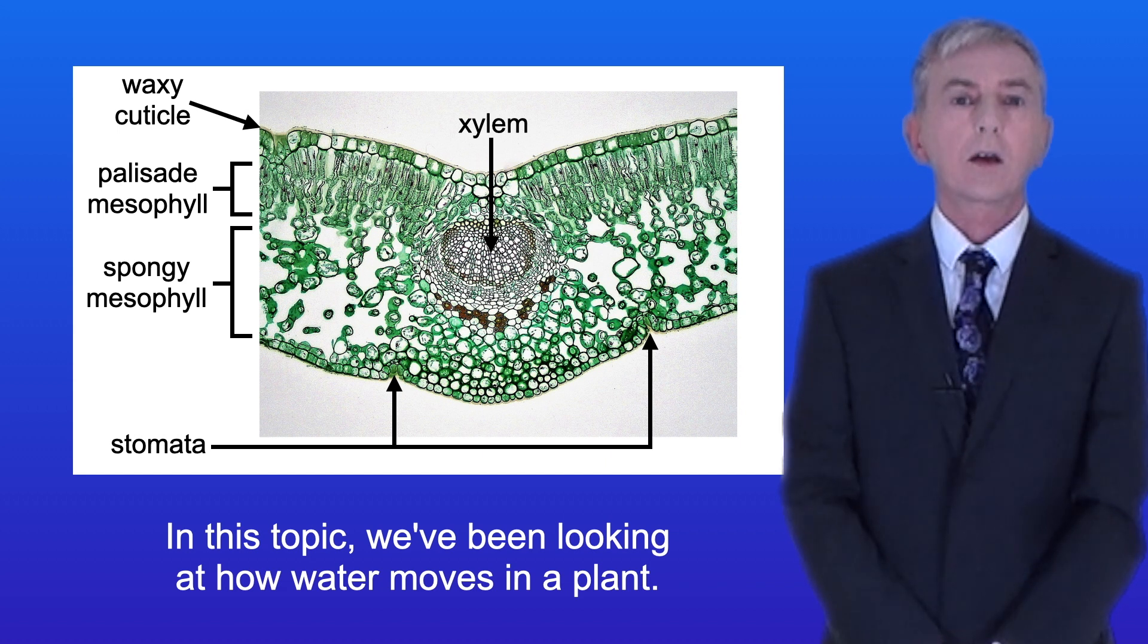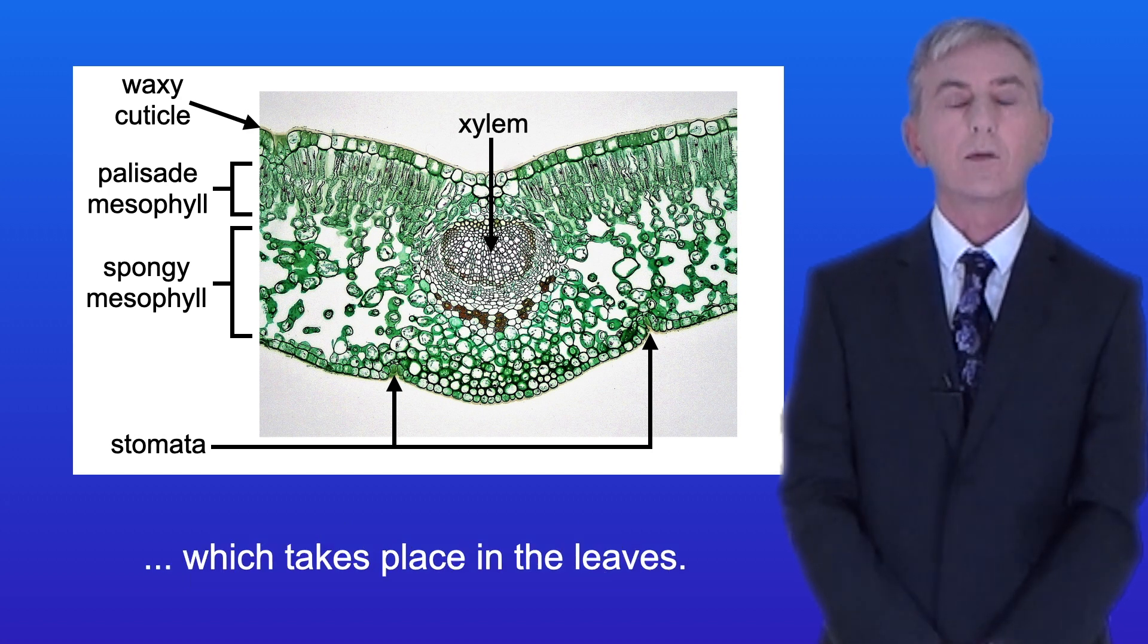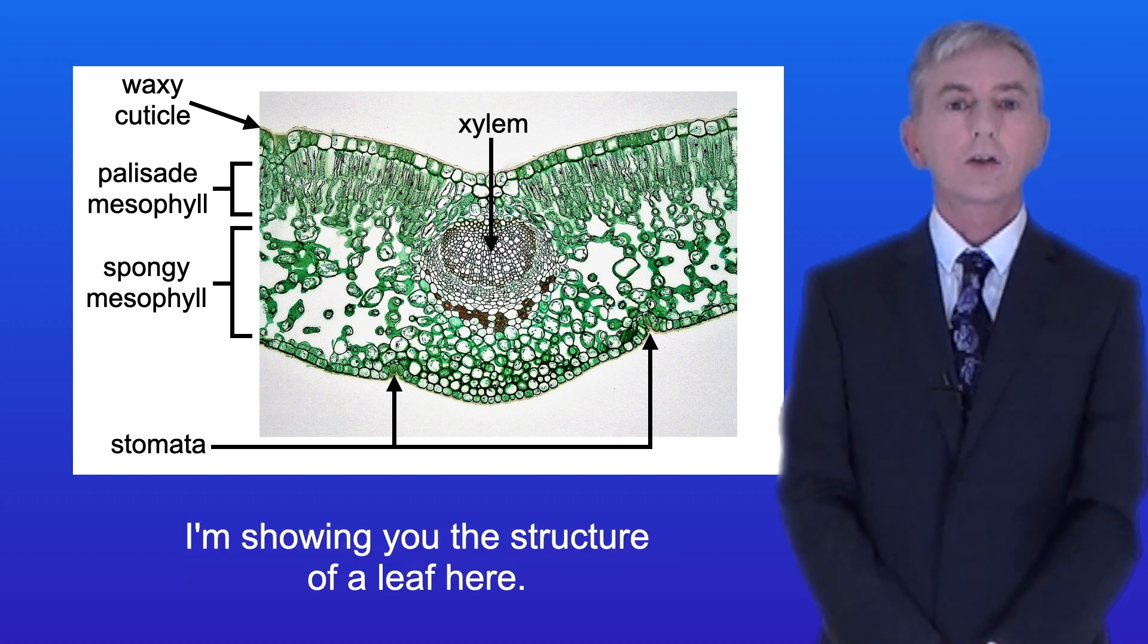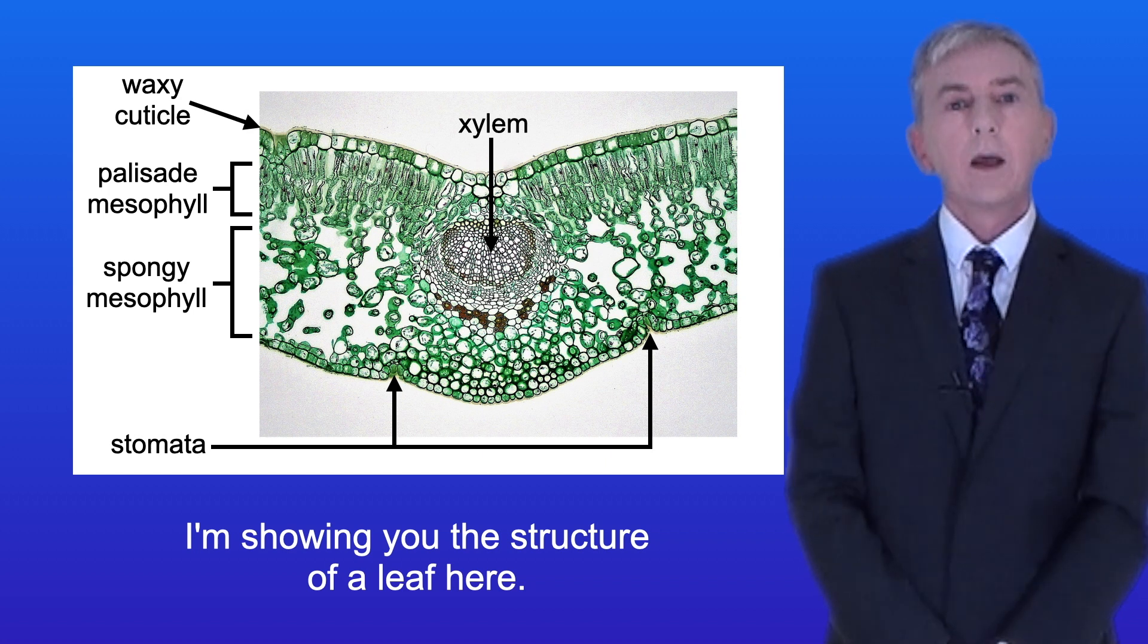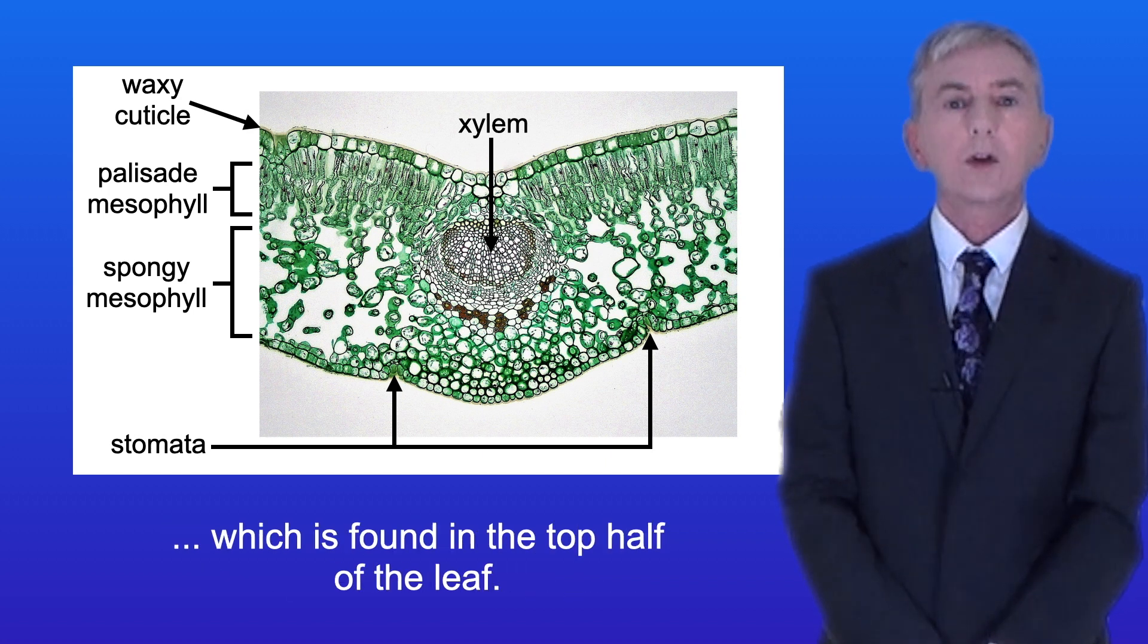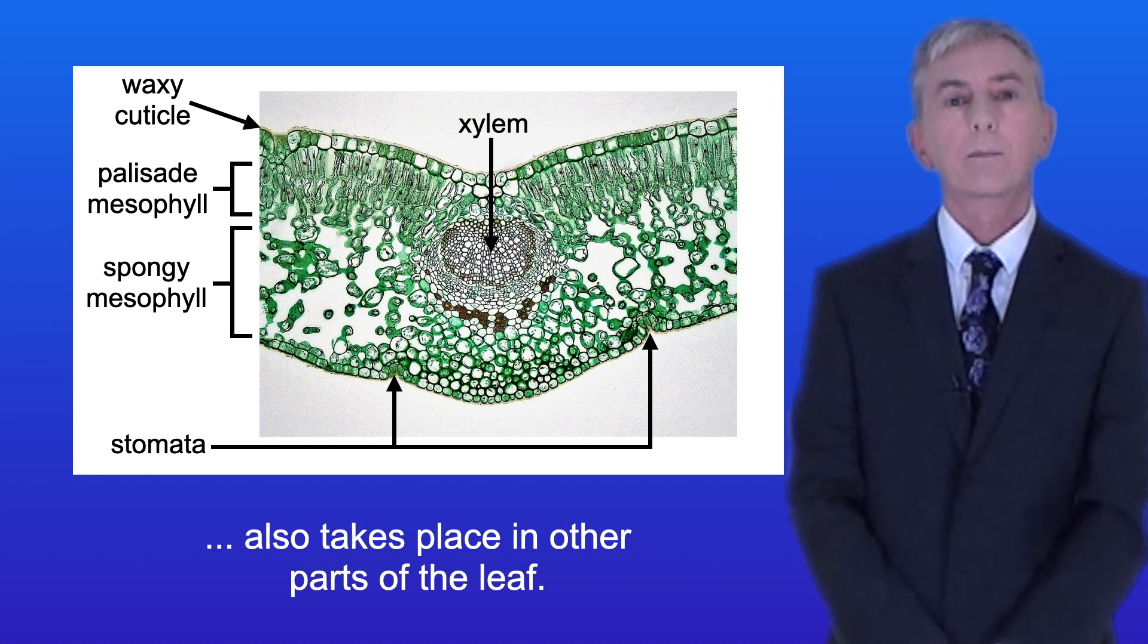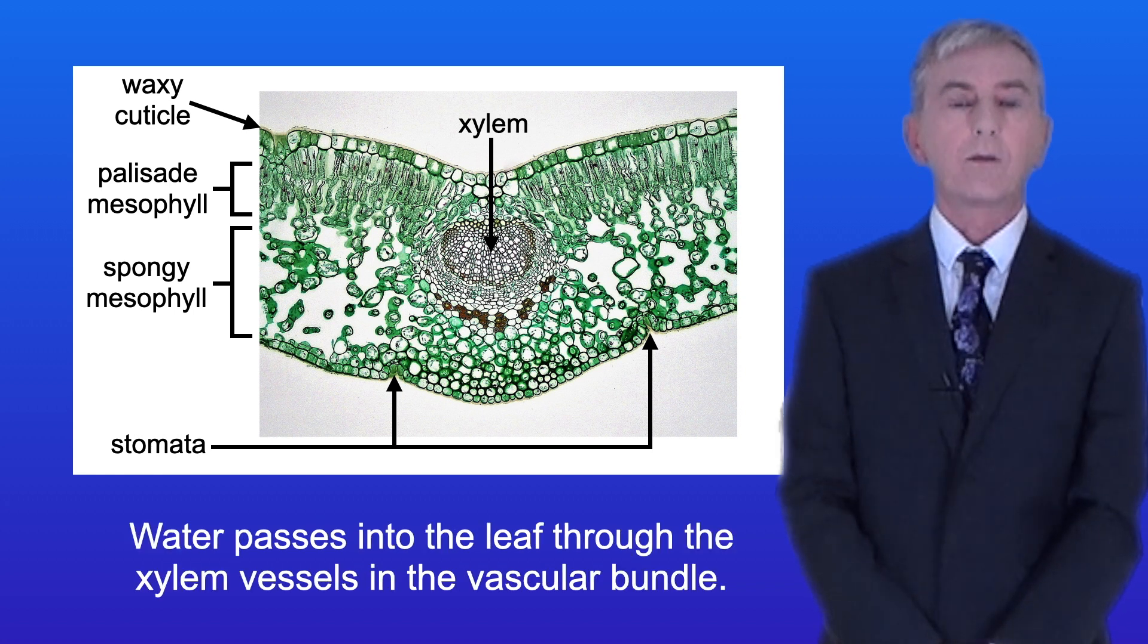In this topic we've been looking at how water moves in the plant. Remember that water is a reactant in photosynthesis which takes place in the leaves. I'm showing you the structure of a leaf here. The main site of photosynthesis is the palisade mesophyll which is found in the top half of the leaf. Although I should point out that photosynthesis also takes place in other parts of the leaf. Water passes into the leaf through the xylem vessels in the vascular bundle.